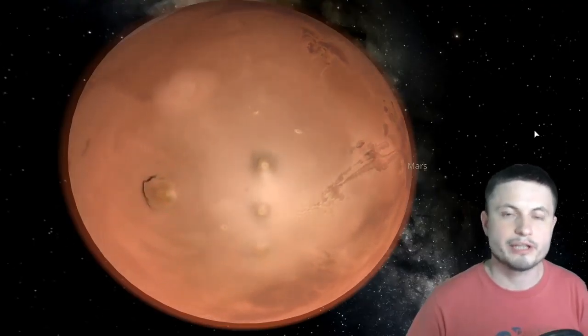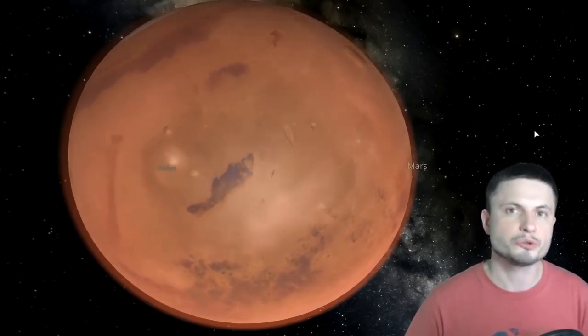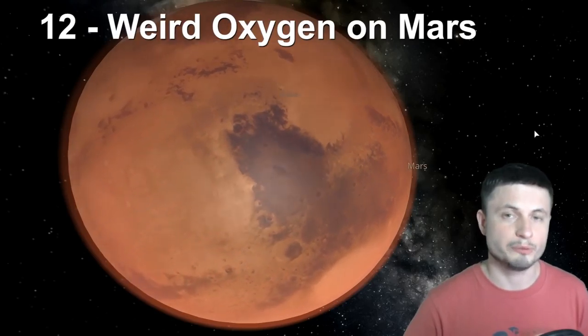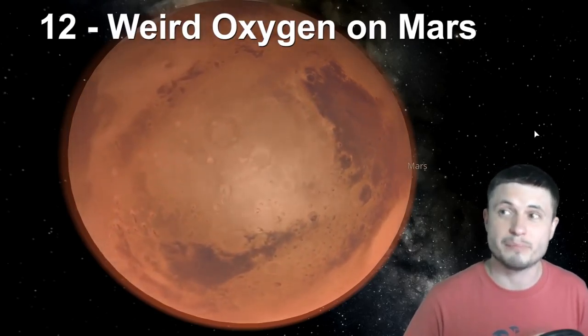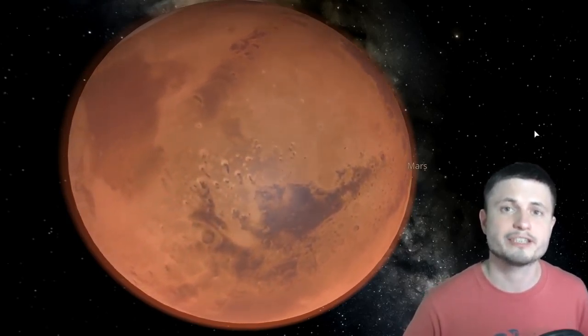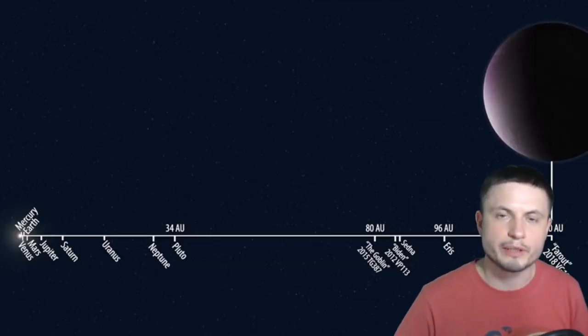And some of the other major discoveries happen right here in the solar system again. This one is in regards to Mars. We've already known about the unusual patterns of methane, but now NASA has discovered that there's also some unusual patterns of oxygen as well. Now in my video I even implied that it might suggest life on Mars, or at least for now we have no geological or chemical explanation to what might cause these unusual and well-defined patterns of oxygen fluctuation that has been detected by NASA in 2019.